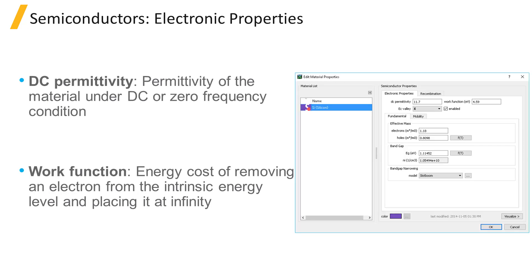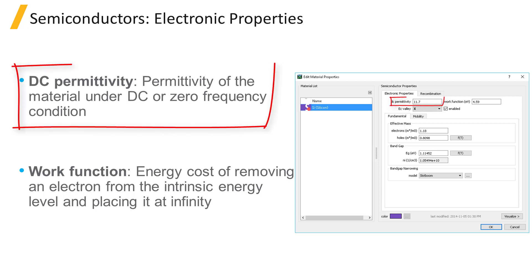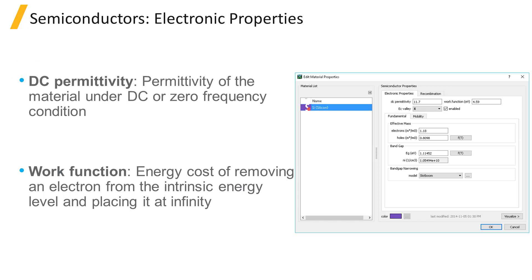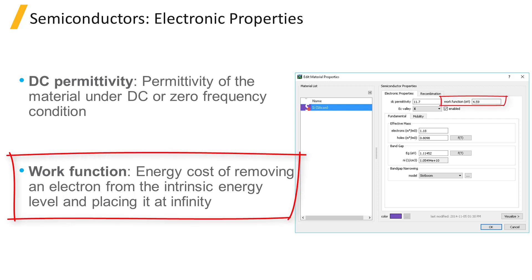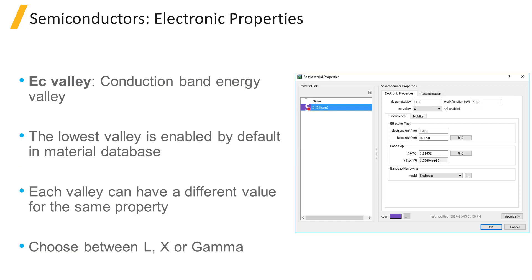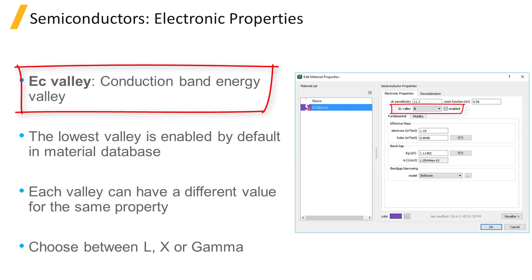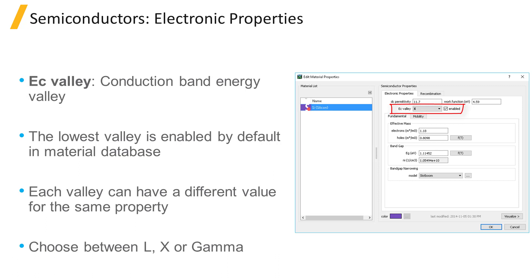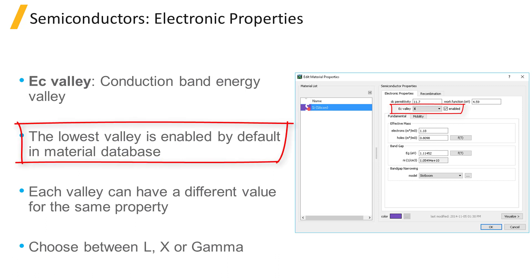Every semiconductor material defined in a charge transport simulation should have a series of electronic properties specified. The first property is DC permittivity, which is the permittivity of the material under DC or zero frequency conditions. In a semiconductor, the work function describes the energy cost of removing an electron from the intrinsic Fermi energy level of the undoped semiconductor and placing it at the vacuum energy level. The conduction band of semiconductors can have several valleys, and by default the lowest valley is enabled for each semiconductor in the material database.